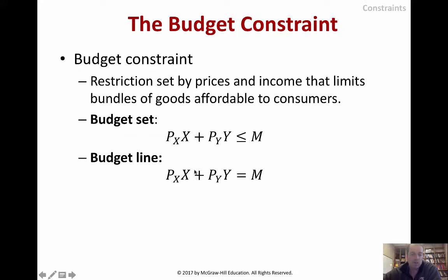This is kind of like a spending category. How much do we spend on X? Well, the price of X times the quantity of X. Similarly, how much do we spend on Y? Price of Y times the quantity of Y. And we could extend this to three or ten different items, just add more letters — Z and A, and so on.